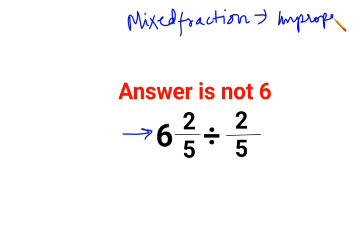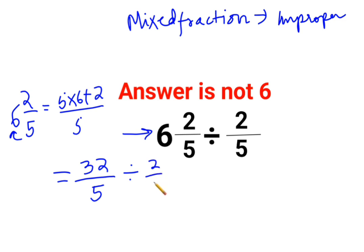Now how do we do that? Basically, 6 2/5 can be written as what? The denominator remains the same, but in your numerator, the 5 gets multiplied with the integer part of the fraction, which is 6, plus the numerator. So your actual question is 32/5 divided by 2/5.